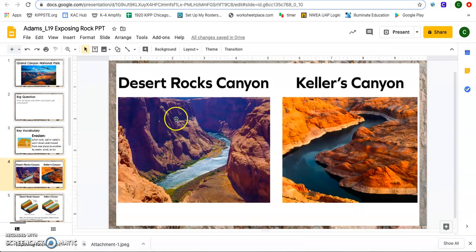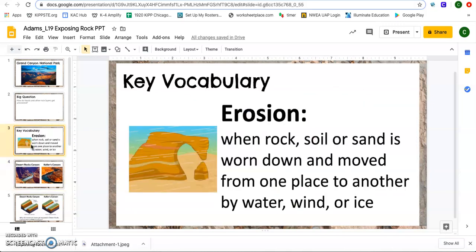So we know that the Desert Rock Canyon is deeper. But here's a question that I actually have for you. I want you to take 10 to 15 seconds to think about, based on your lesson from yesterday and your assignment from yesterday, what do you think might be causing erosion in these two canyons?